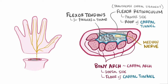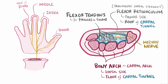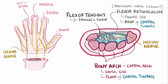The skin of the hand served by the median nerve includes the thumb, the index finger, the middle finger, as well as half of the ring finger that's on the thumb side. The other side of the ring finger and pinky are served by the ulnar nerve, and the back of the hand is served by the radial nerve. Only the median nerve goes through the carpal tunnel.